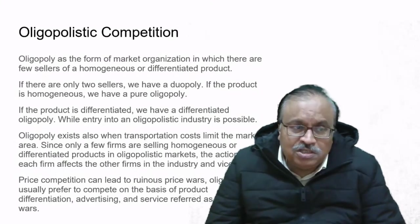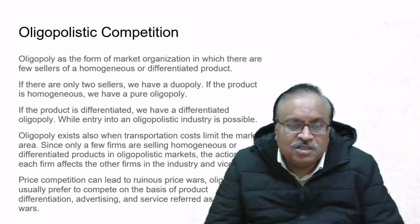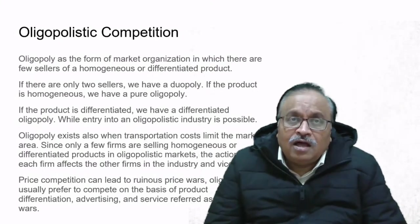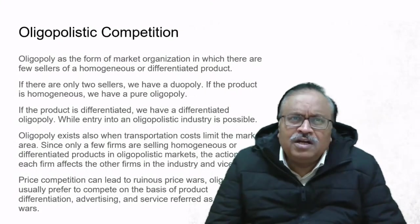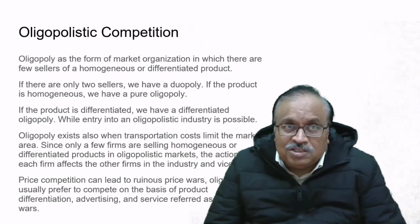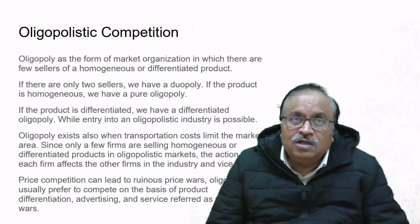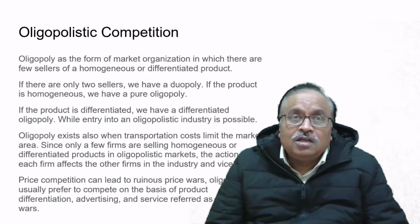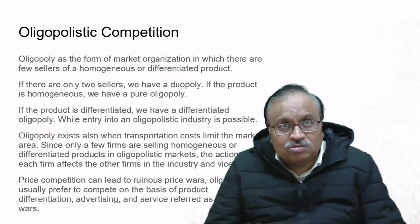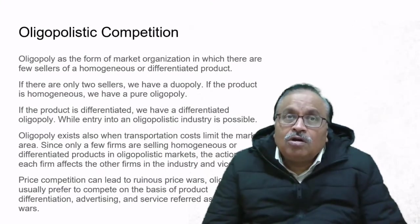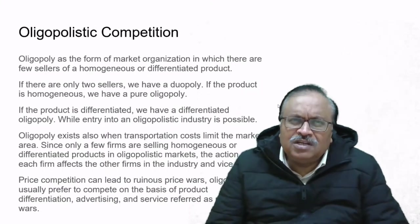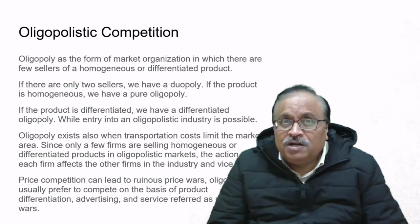Since only a few firms are selling homogeneous or differentiated products, the action of each firm affects the others and vice versa. Take the automobile sector—there aren't 100 or 200 companies; there are maybe 15 to 20. These firms follow each other closely. If the price of a particular car goes down, every other company tries to match it. If advertising goes up, firms follow each other because the number of firms is limited.